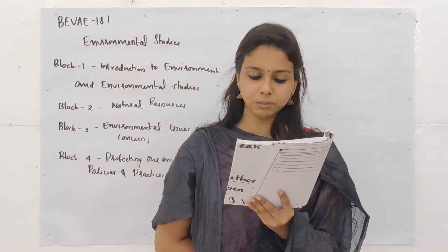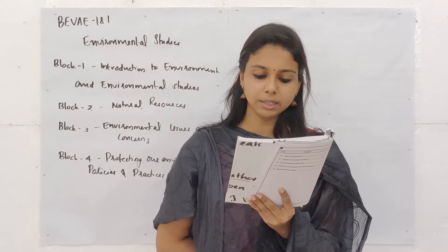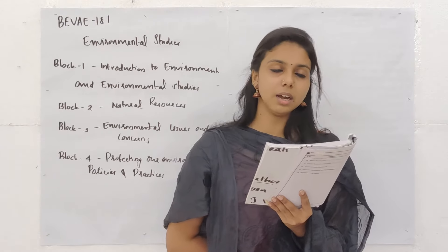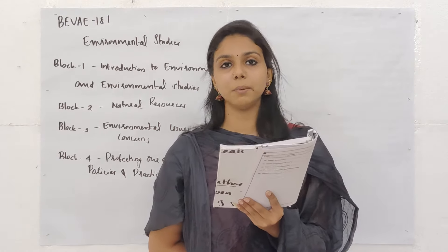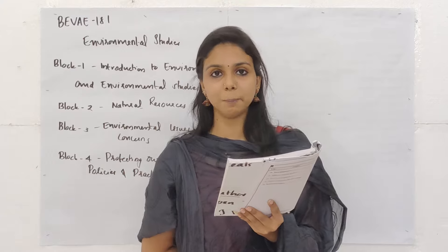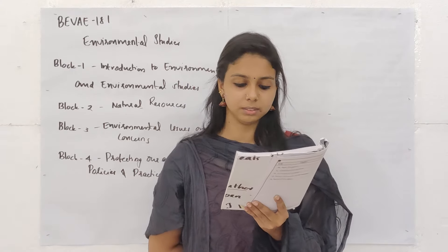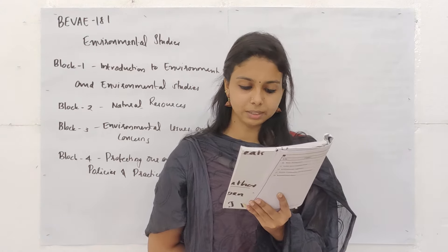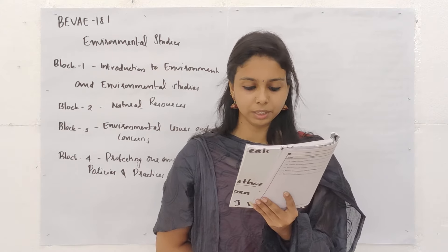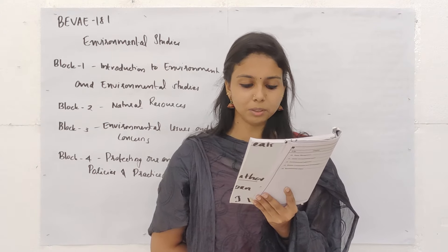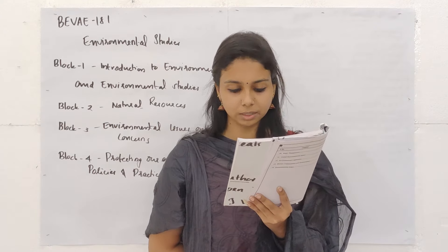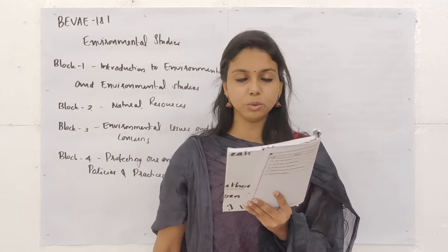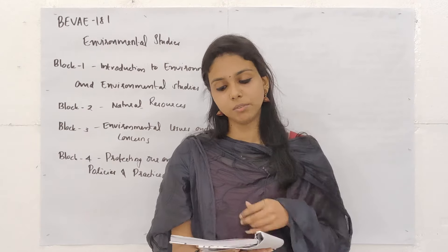Question 12: Among the following factories, which is not in the Taj Trapezium zone? Options: A. Glass factories, B. Madura oil refinery, C. Madura sugar factory, D. Brick kilns. The answer is Madura sugar factory.